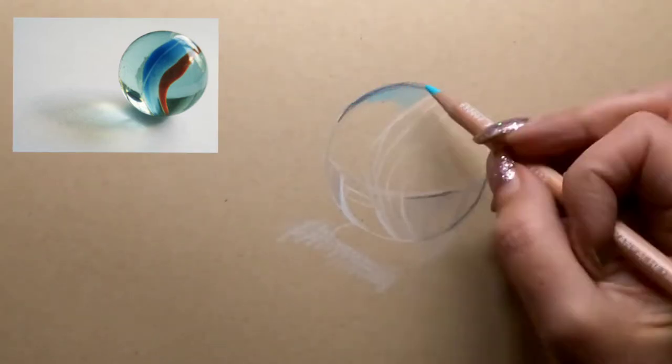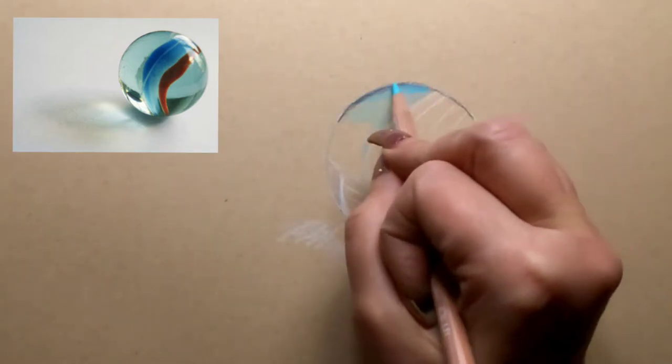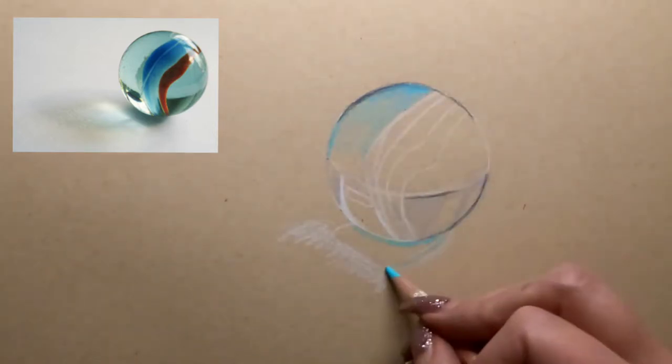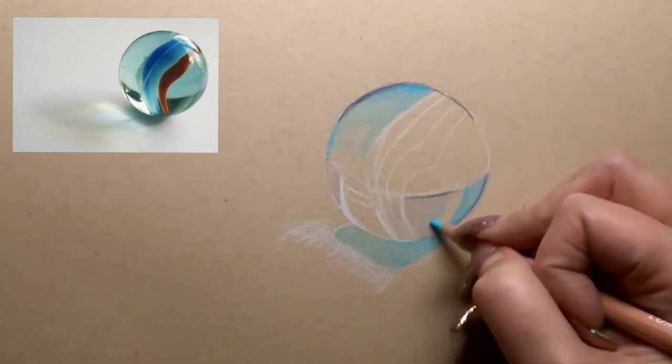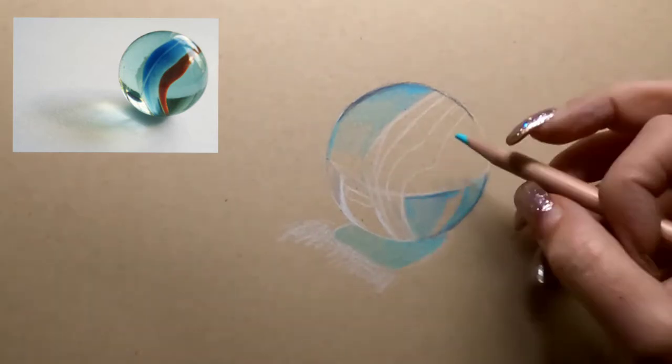There's just a tiny bit of that and then we're gonna go in with the 181 and start filling in our areas where the marble looks blue and in our part of our shadow.